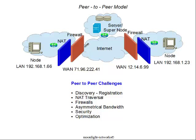NAT traversal is again an issue, and it's even more of an issue in P2P because there are two NATs and two firewalls to be traversed. Asymmetrical bandwidth is also more of an issue in this model. In the client-server model, content was coming from the server to the host. Here, content flows from the node across the Internet, meaning the upstream bandwidth of the node will be taxed. In access networks like DSL and cable, upstream bandwidth tends to be on the order of one-tenth of the downstream bandwidth. Security is another issue: we need to traverse the NAT and firewall, which means poking holes in them and defeating some of the security characteristics of those devices, potentially opening security issues for local area networks.